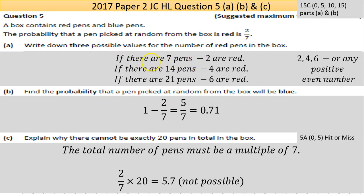So I've written that down there: if there are 7 pens, 2 must be red; if there are 14 pens, 4 must be red; if there are 21 pens, 6 must be red. Assuming that probability is correct, but we have to accept that it is because that's what we've been told.